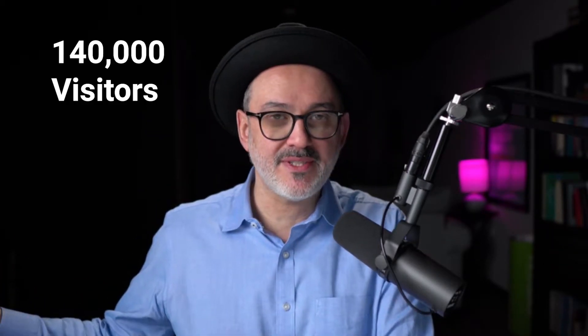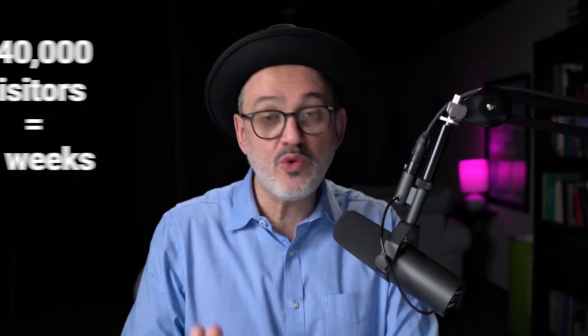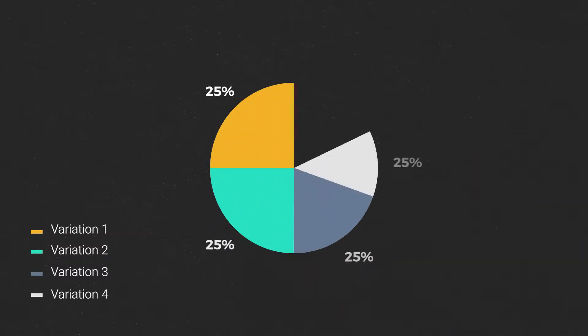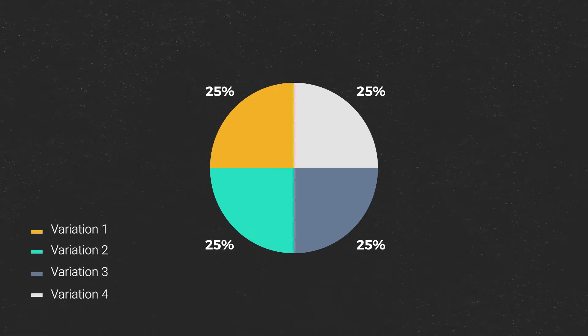To get 140,000 visitors, you might need two weeks. You do those calculations, you start your test, you're splitting the traffic between the variations. You have four variations: 25% to the control, 25% to each one of the challengers. That is how standard A-B testing works.